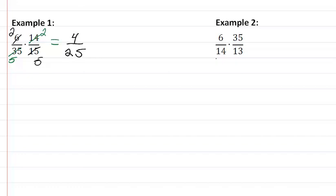Let's look at example two. When I look at this one, I see that 14 and 35 have a common factor of 7, so 14 divided by 7 is 2, and 35 divided by 7 is 5.